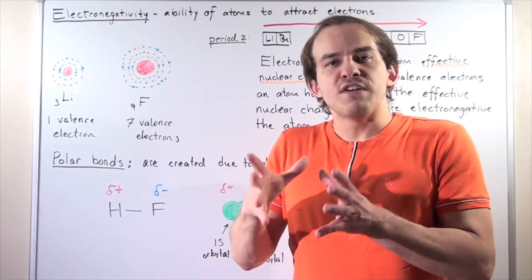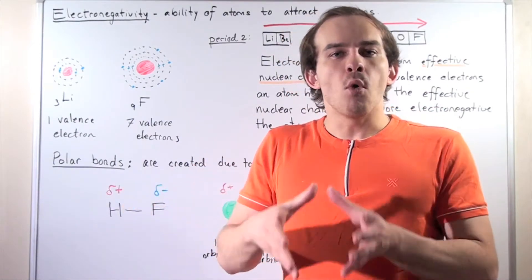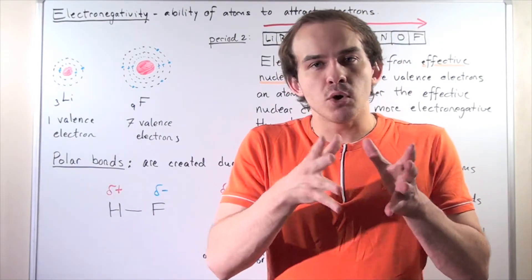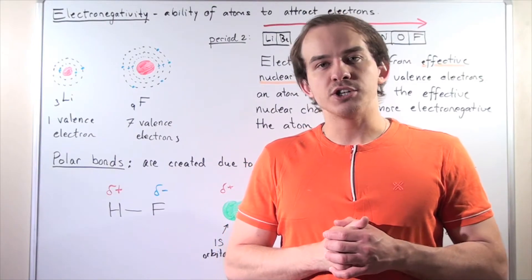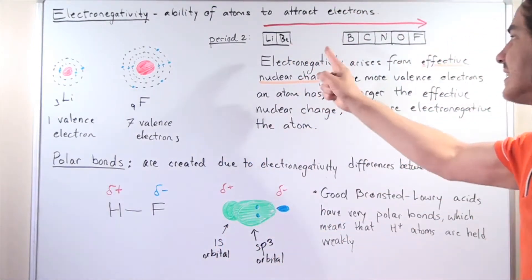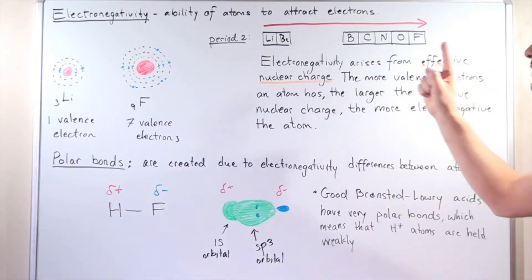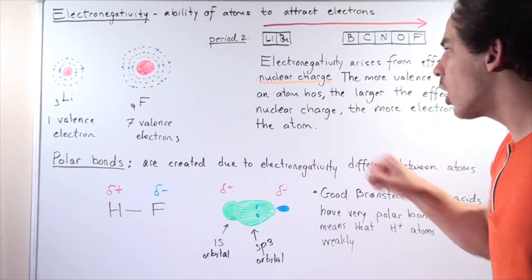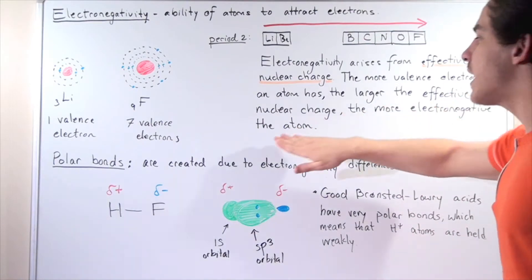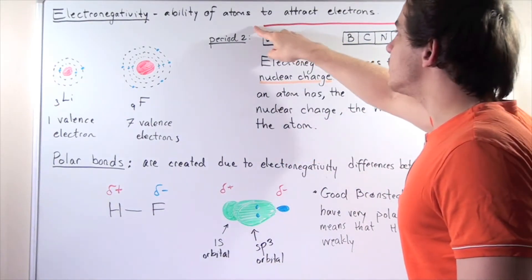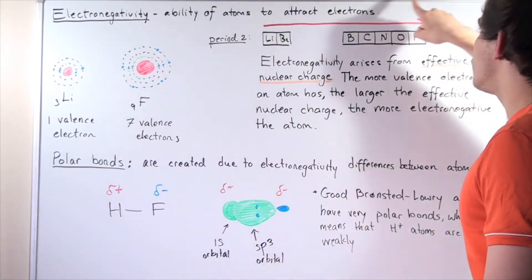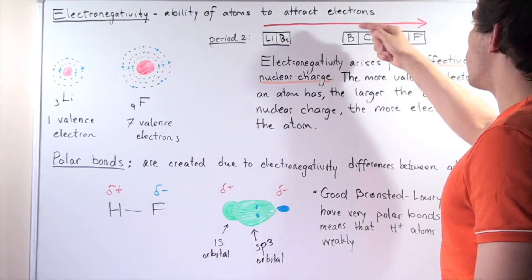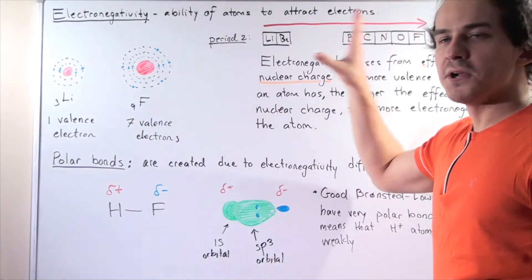The more valence electrons we have, the larger the effective nuclear charge. The more innermost electrons we have, the smaller the effective nuclear charge. Electronegativity arises from effective nuclear charge — the more valence electrons an atom has, the larger the effective nuclear charge and the more electronegative the atom. That's exactly why electronegativity increases as we go from lithium to fluorine: the number of valence electrons increases from left to right on the periodic table.